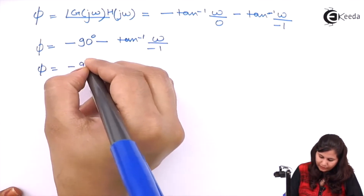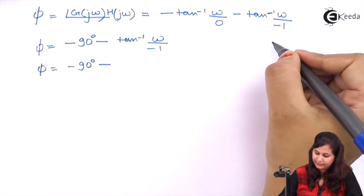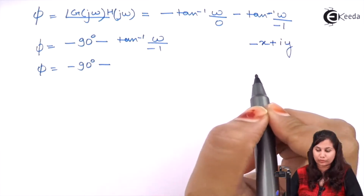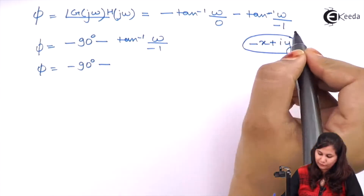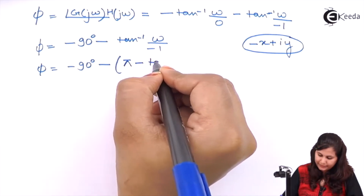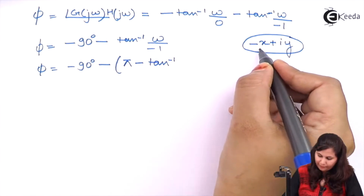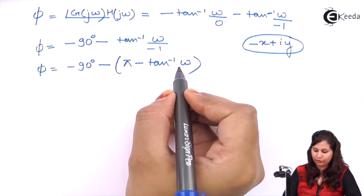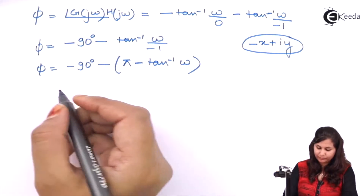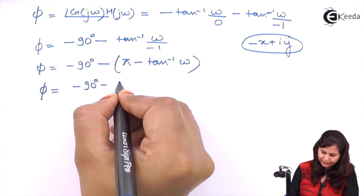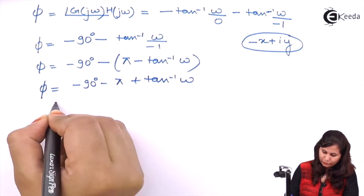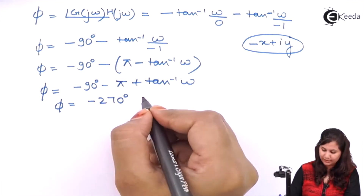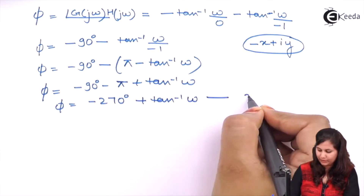The term tan⁻¹(ω/−1) lies in the second quadrant (−x + jy form), so the phase angle is π − tan⁻¹(ω). Substituting, we get −90° − (π − tan⁻¹(ω)) = −90° − 180° + tan⁻¹(ω) = −270° + tan⁻¹(ω). Mark this as equation number 2.